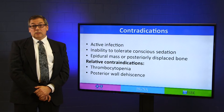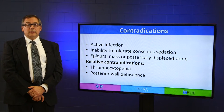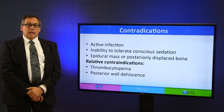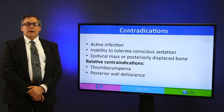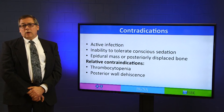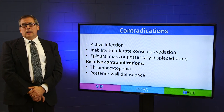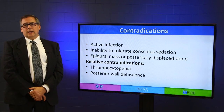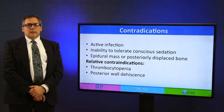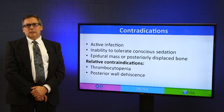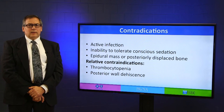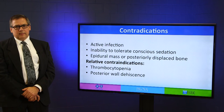Relative contraindications include thrombocytopenia, which would need to be corrected first with platelet infusions — we like to have the platelet level at least 80,000 before we treat. Posterior wall dehiscence is a gap in the bone posteriorly in the vertebral body adjacent to the spinal cord or nerve roots. That's a relative contraindication because things can be done to control the cement delivery and avoid having it leak through the gaps if you're aware of them.